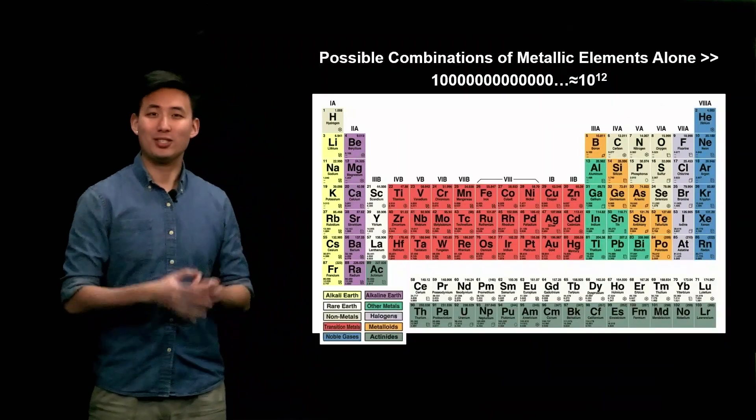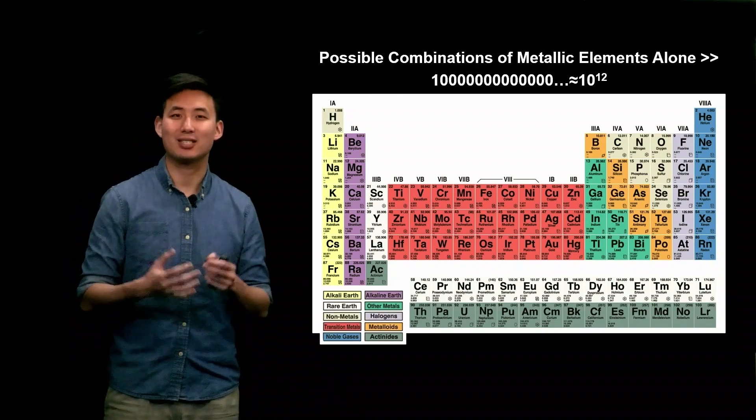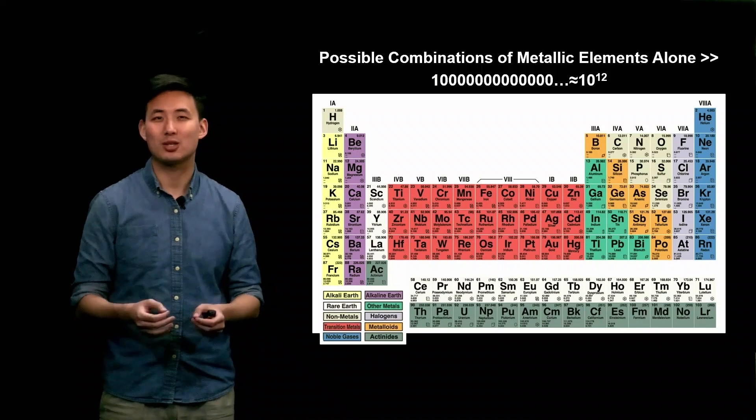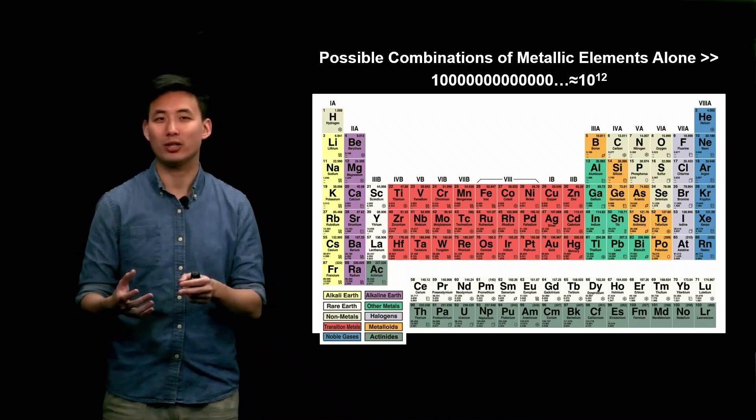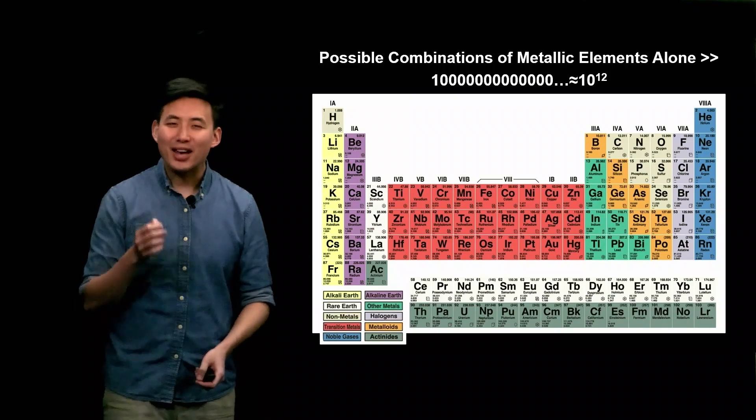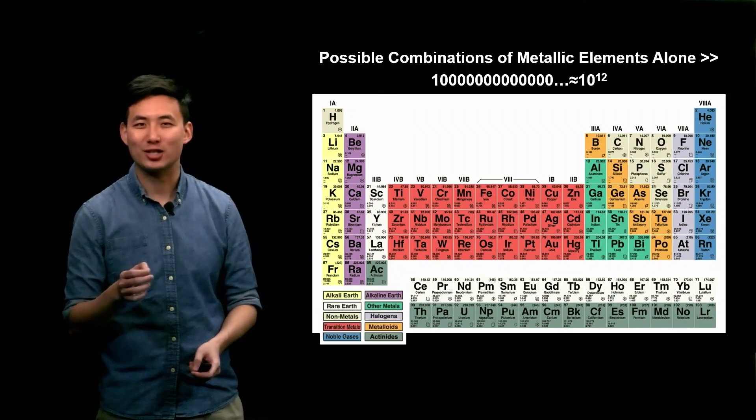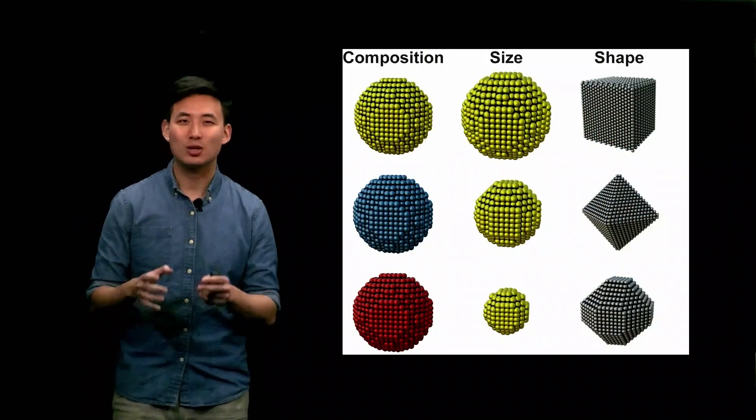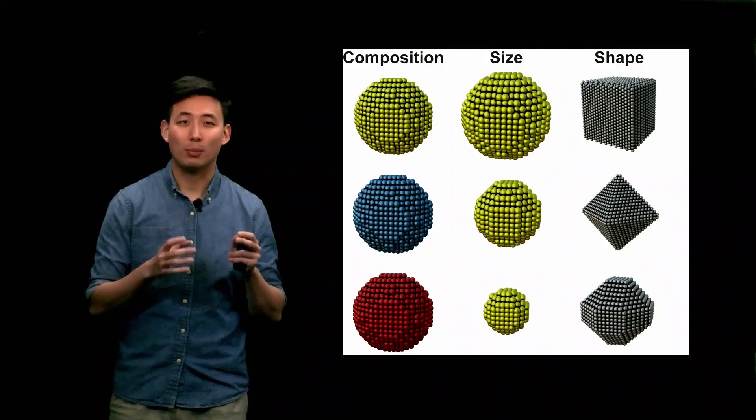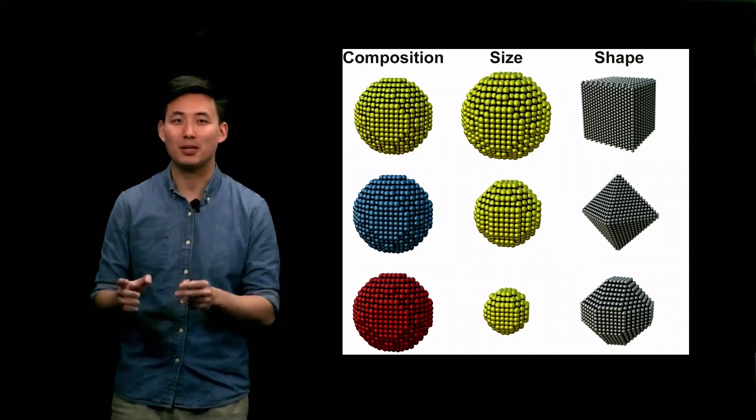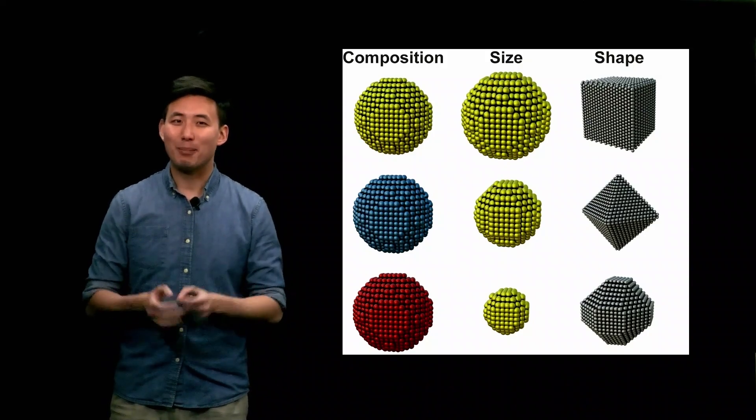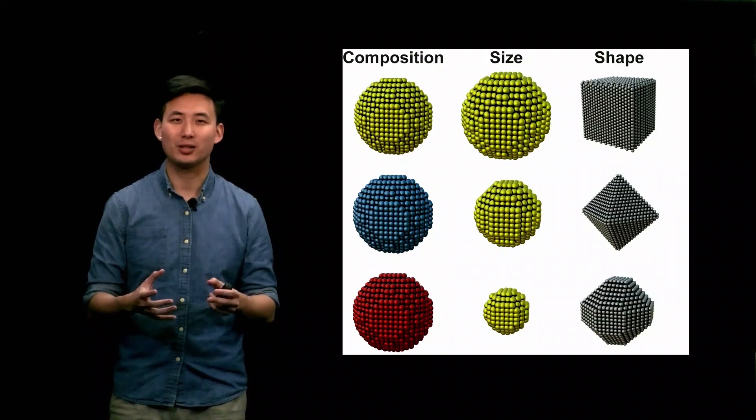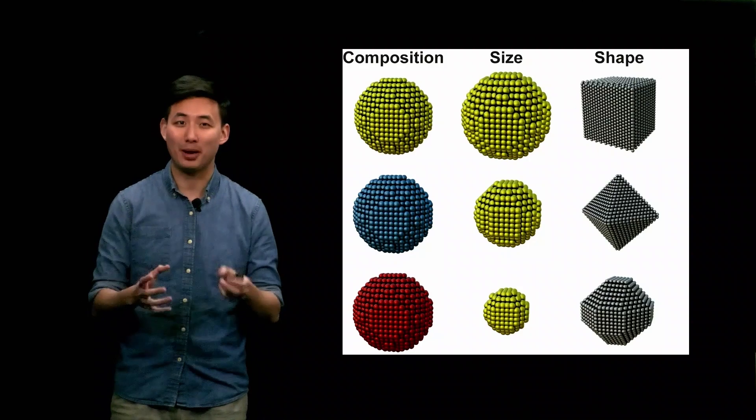To make matters worse, an almost infinite number of material combinations exist. For example, take the periodic table, a tool chemists use to organize elements into groups based on their electronic and chemical properties. There are trillions of possible combinations of the 91 metallic elements alone. If you consider that their properties not only change as a function of composition, but also as a function of material size and shape at the nanoscale, the actual number of combinations is significantly higher. It would be impractical to investigate all of these possibilities with traditional serial methods.